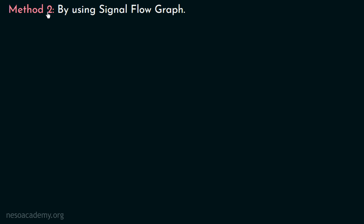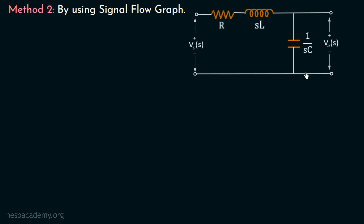Moving on to Method 2, which is the calculation of the transfer function using the signal flow graph. Let us consider the given electrical network one more time. We have a series RLC circuit in which the impedance of the resistance is R, the impedance of the inductor is SL, and the impedance of the capacitor is 1 over SC. The input voltage is Vi(S) and the output voltage measured across the capacitor is Vout(S). We will now convert this complete electrical network into its equivalent signal flow graph.